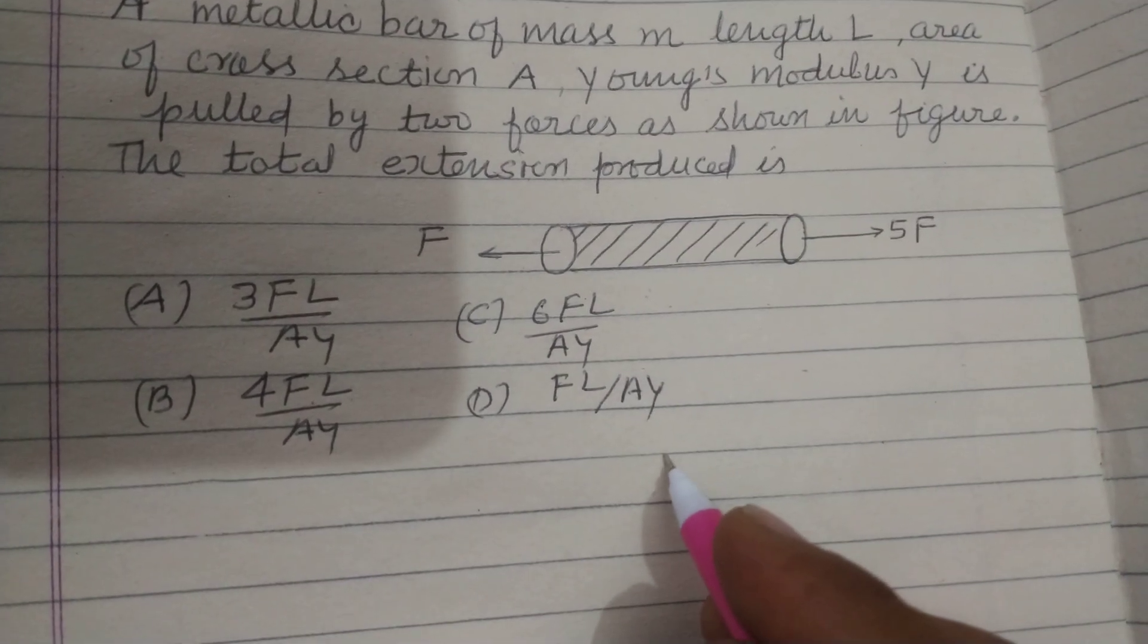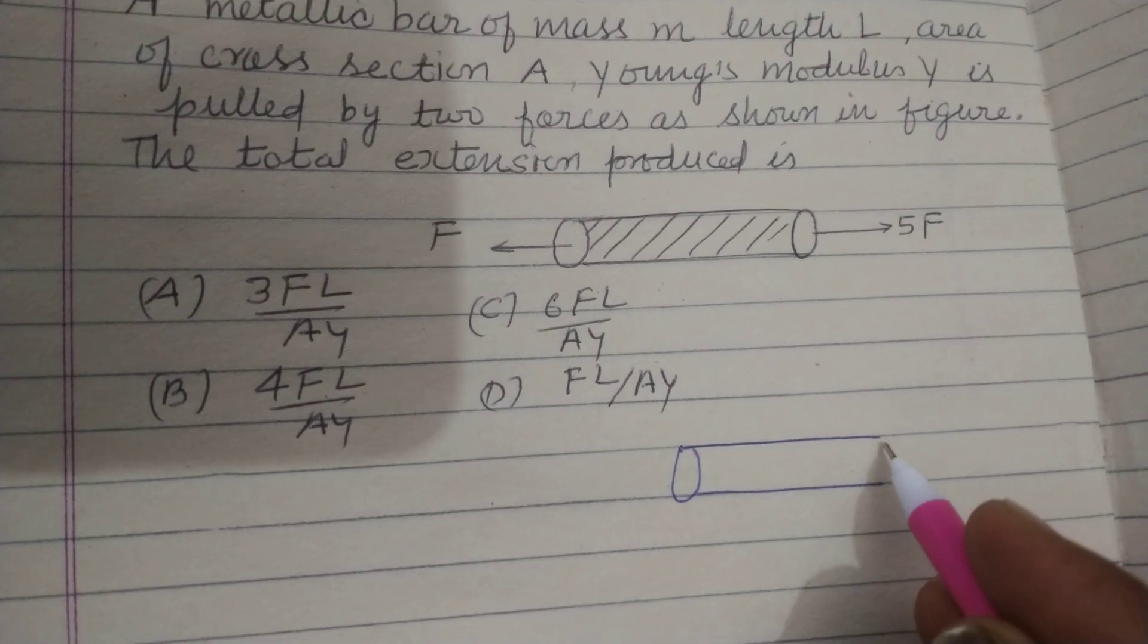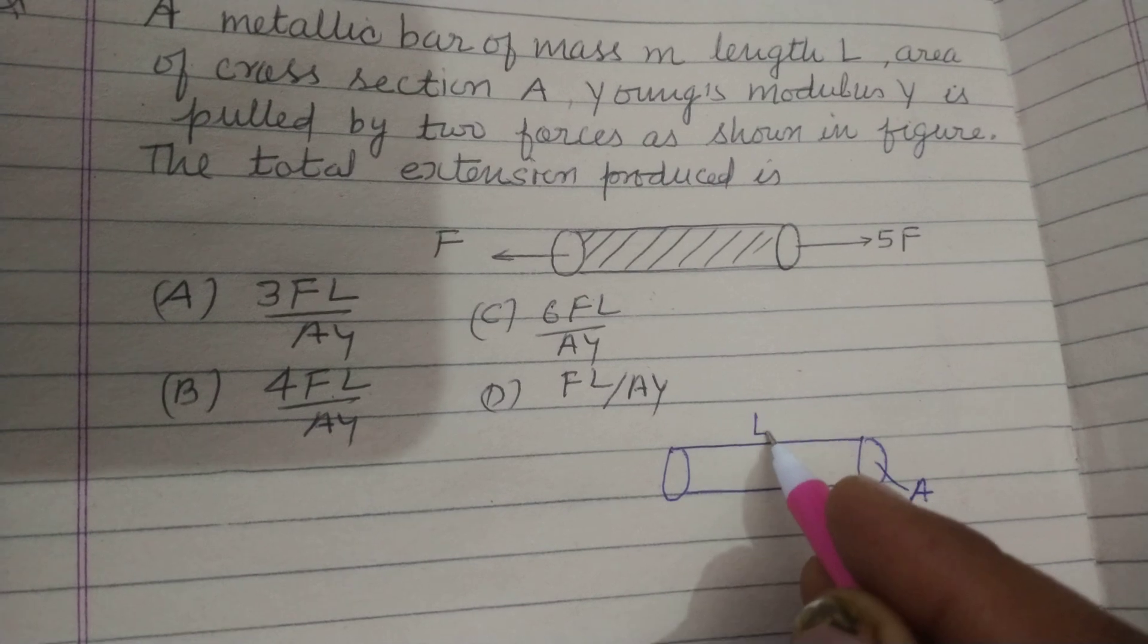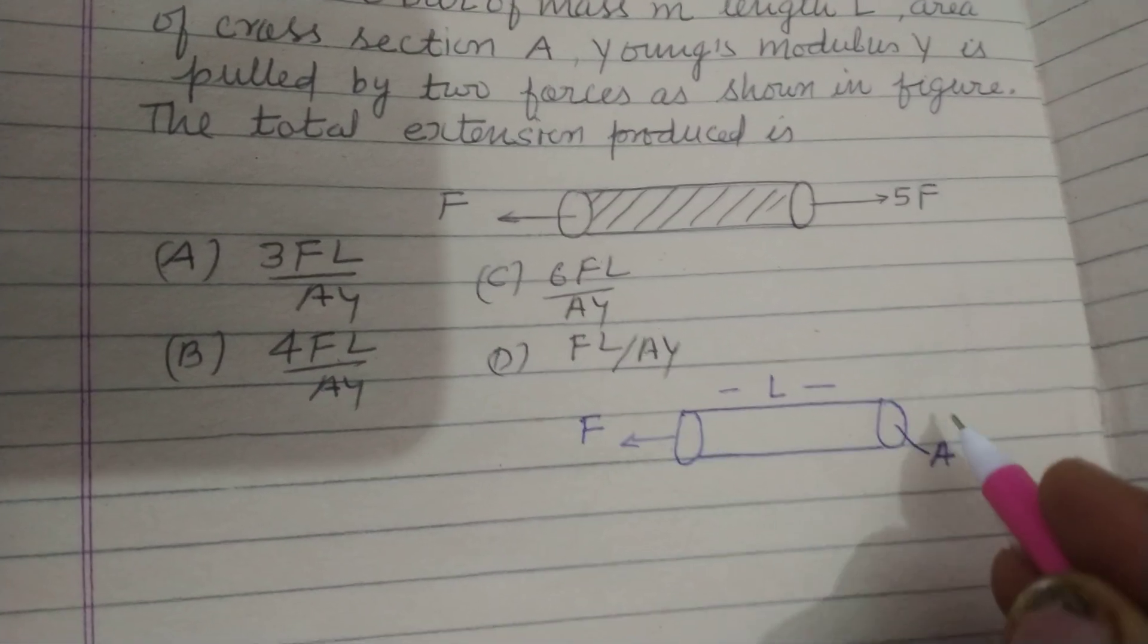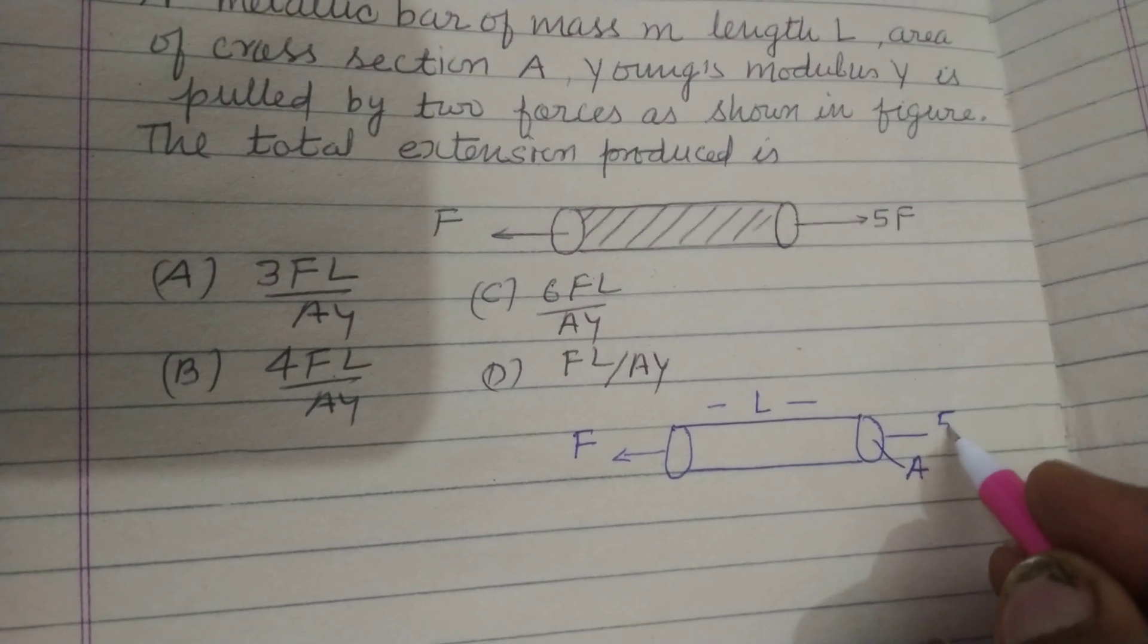So students, this is a bar of cross section area A and length L. Here force F is acting and here 5F is acting.